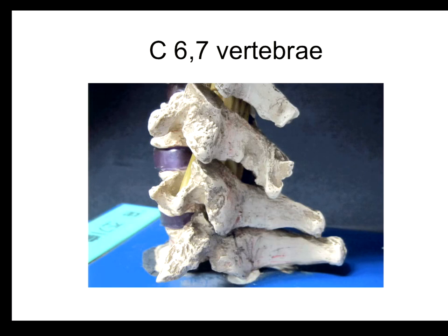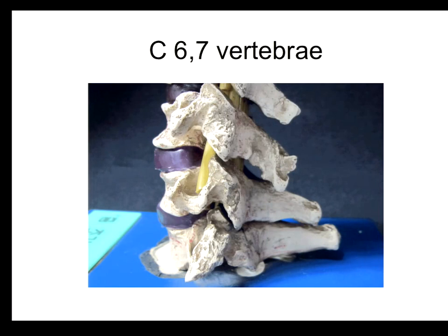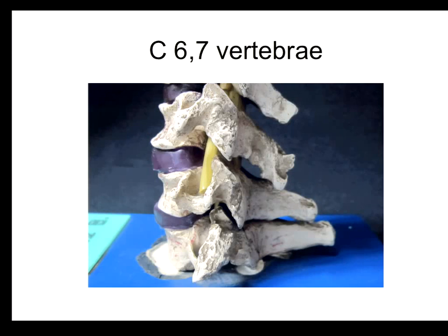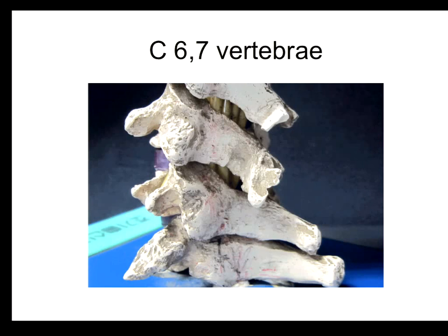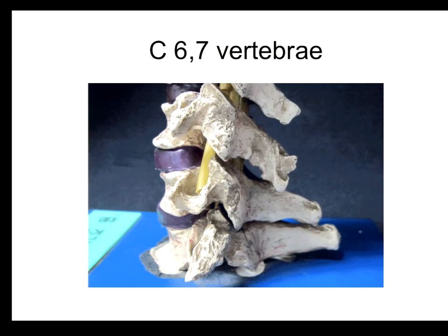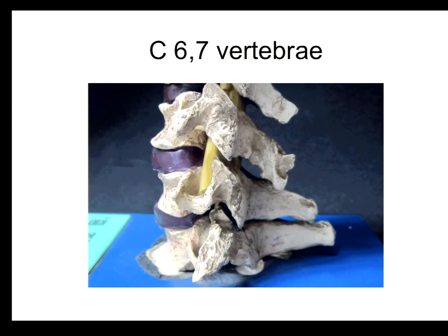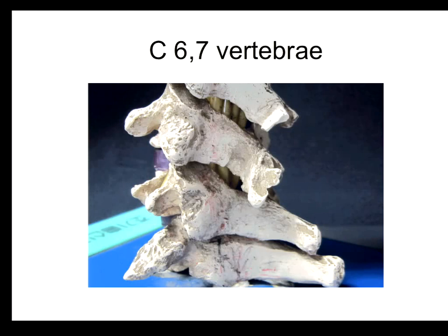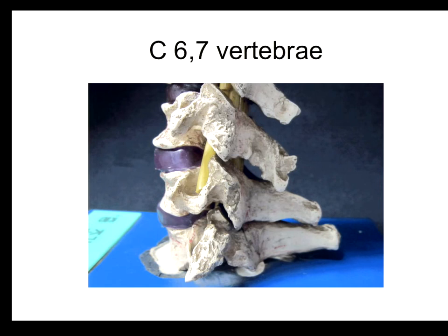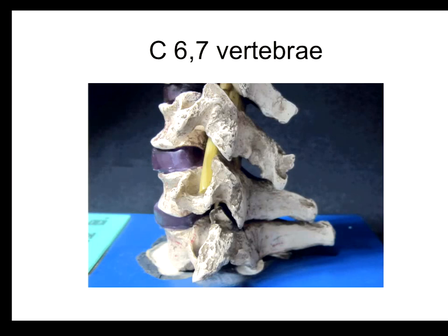At C6, you can see a more prominent posterior tubercle but a smaller and less prominent articular pillar. Another way to differentiate C5 from C6 is the wide gap between posterior tubercle and articular pillar at C6. At C7, you cannot see any division of anterior and posterior tubercle from the transverse process scan. The transverse process is very prominent, and there is no visible articular pillar at C7.